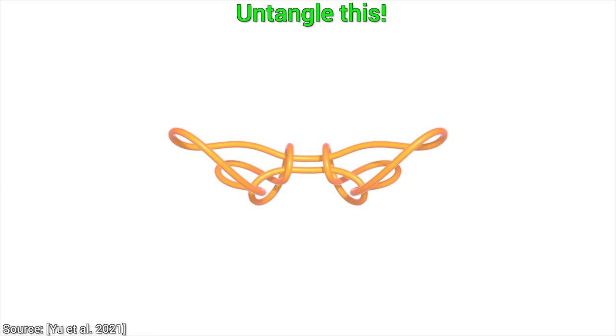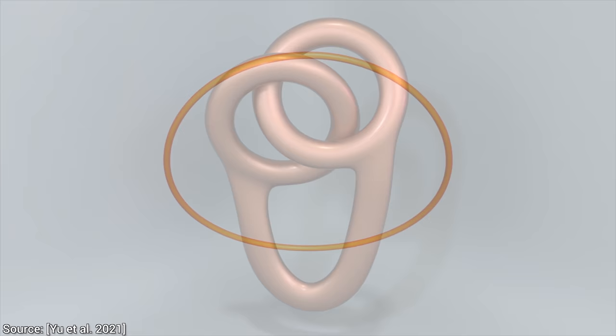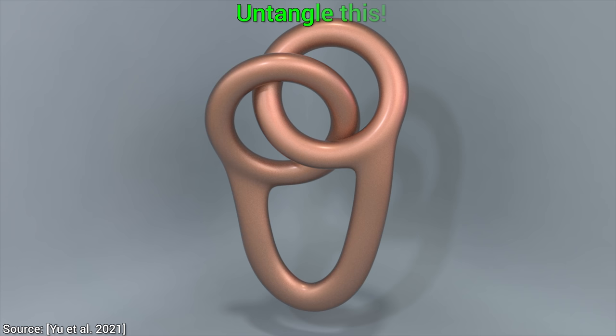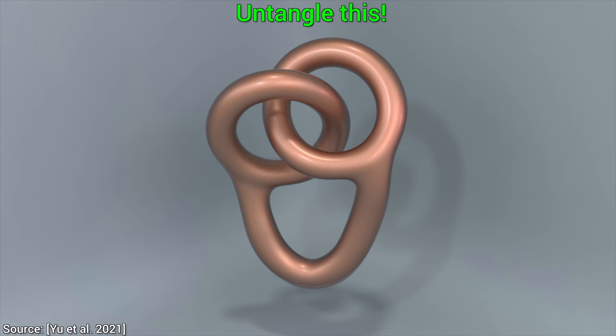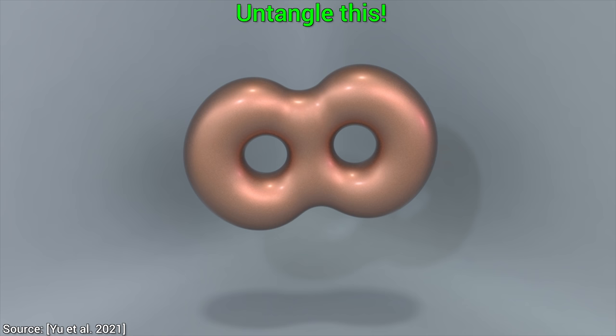For instance, imagine that we have this tangled handcuff. And someone comes up to us and says they can untangle this object by molding, and not only that, but this person gets even more brazen. They say that they even do it gently. Or, in other words, without any intersections.